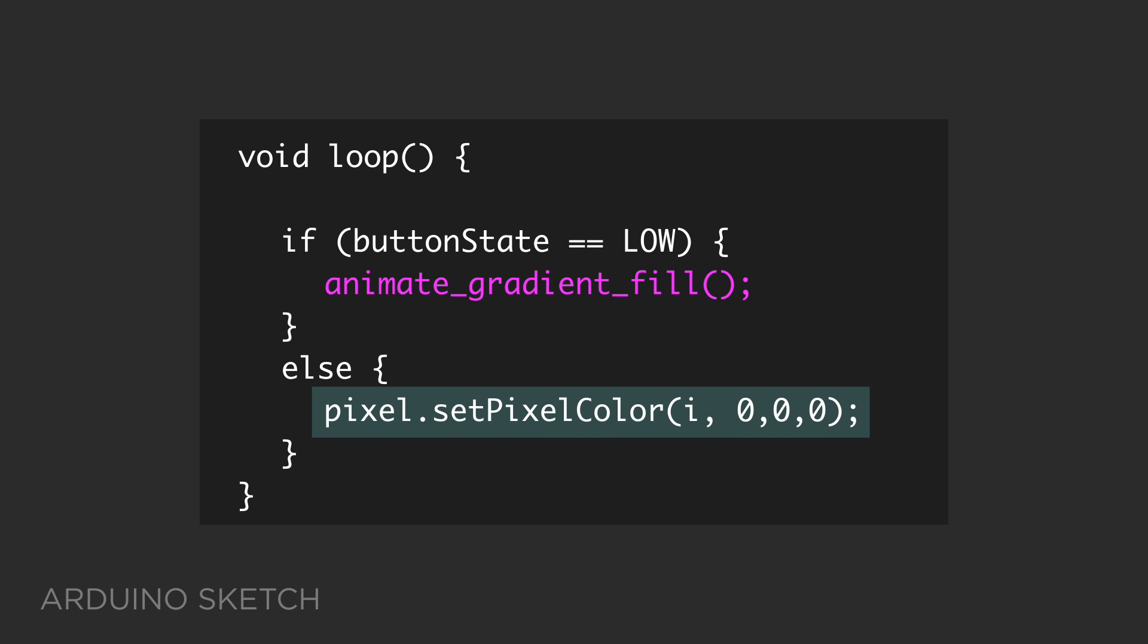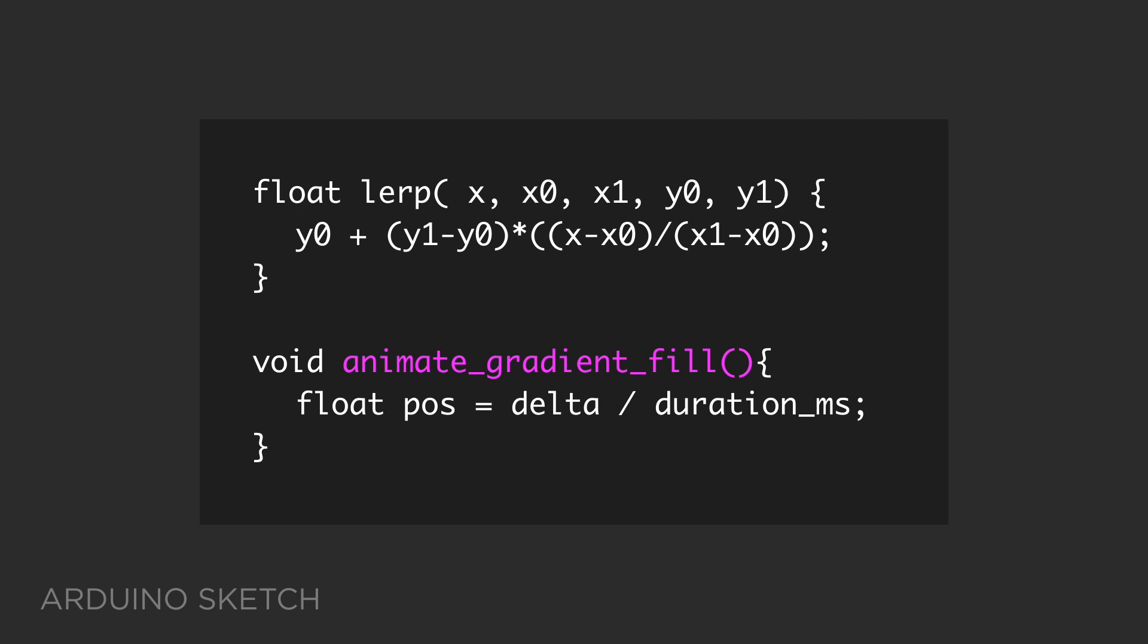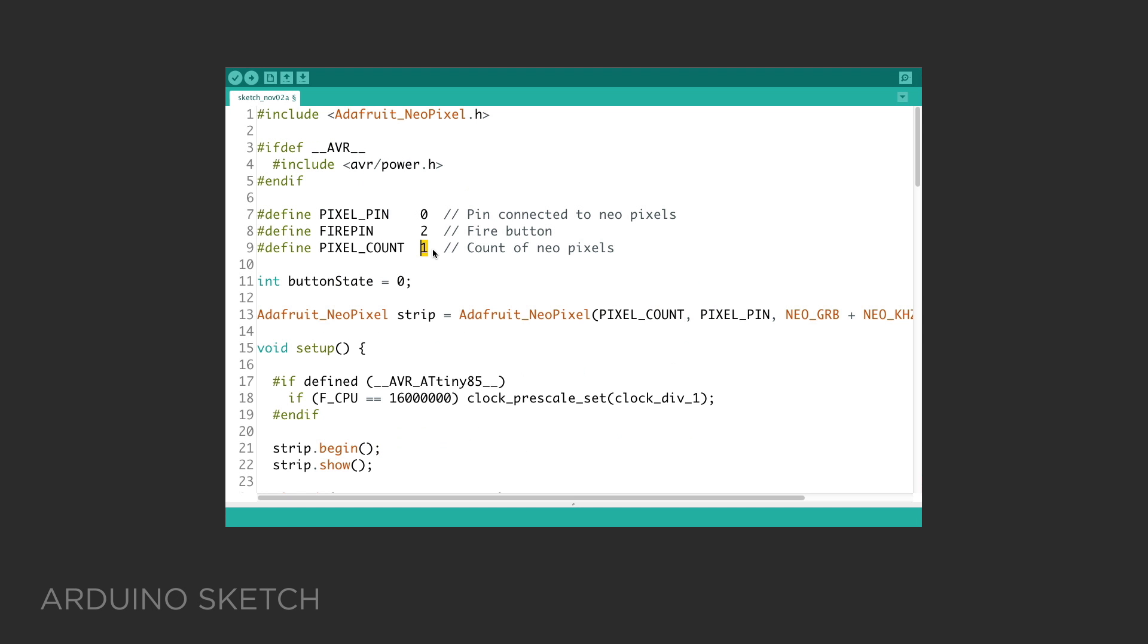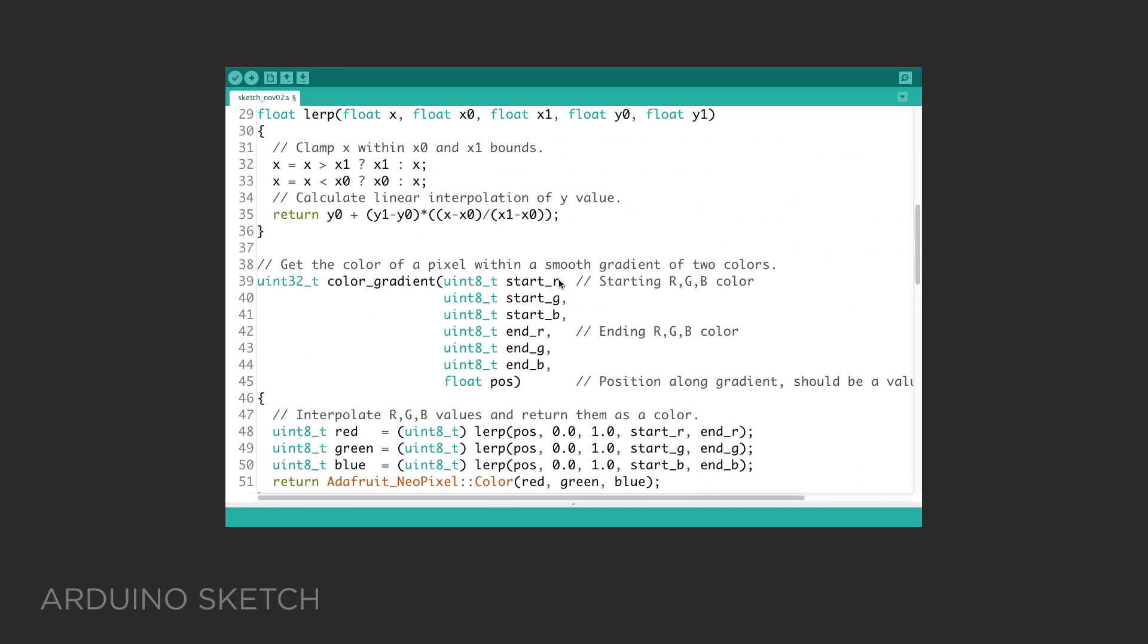Otherwise, turn off the NeoPixel. The animation function itself uses linear interpolation to fade RGB color values in a gradient over a period of time. It's easy to change the colors in the gradient, and you can also scale the animation by increasing the number of pixels. Be sure to check out the tutorial to get the full code and a better understanding of how it all works.